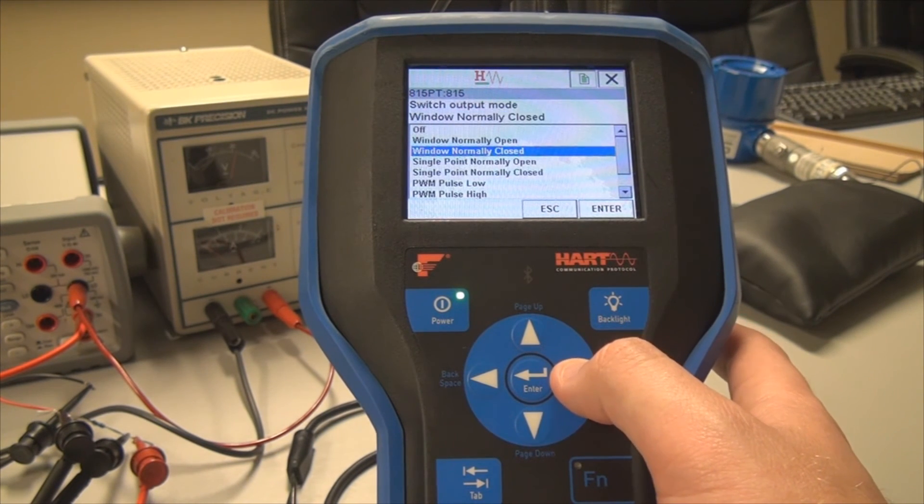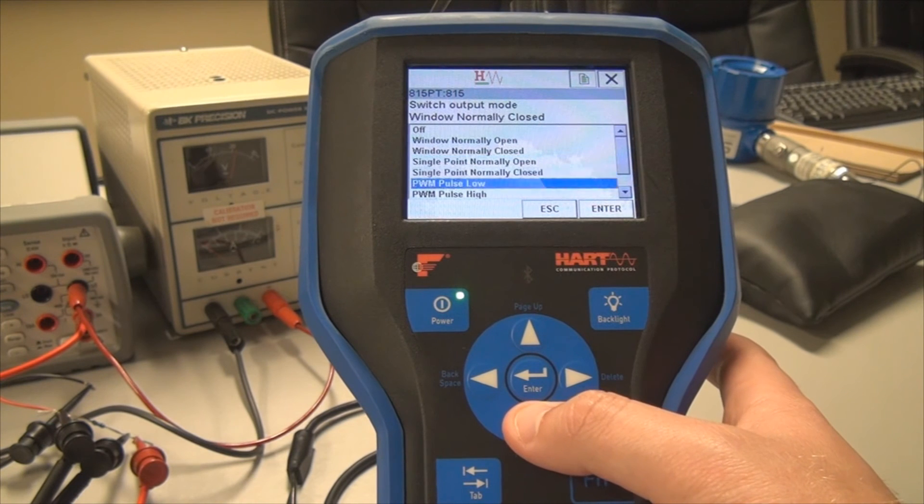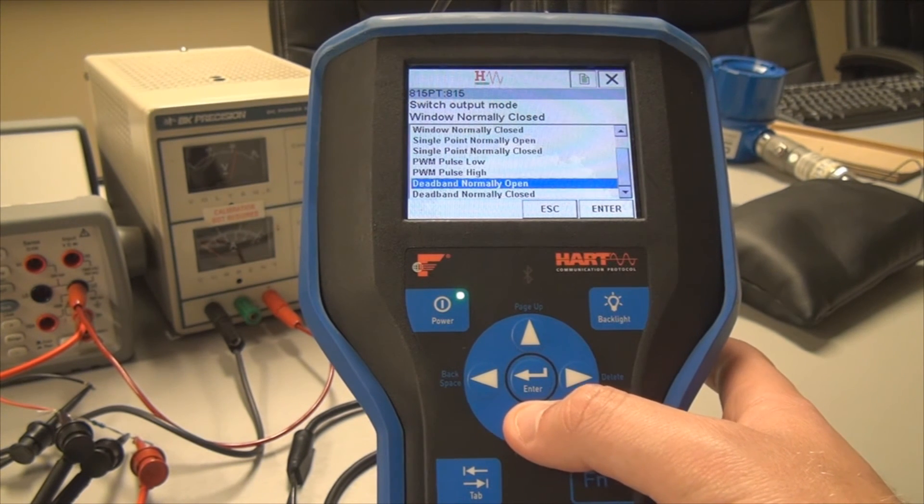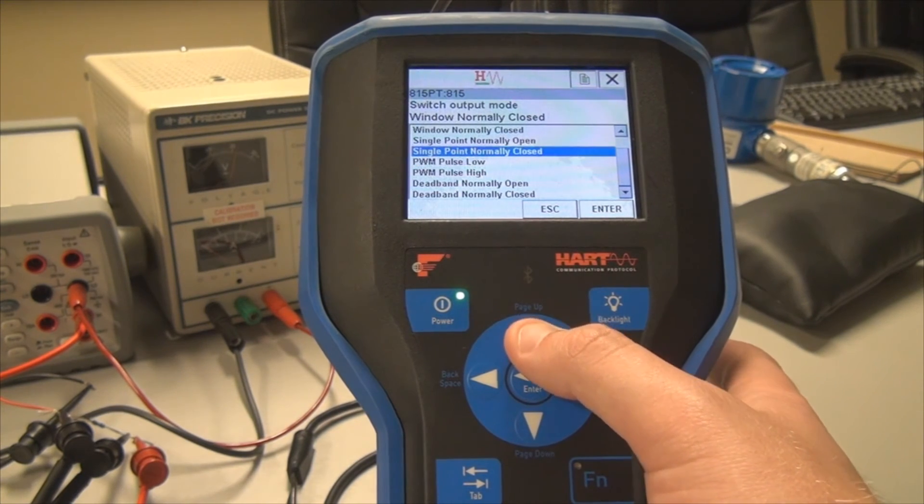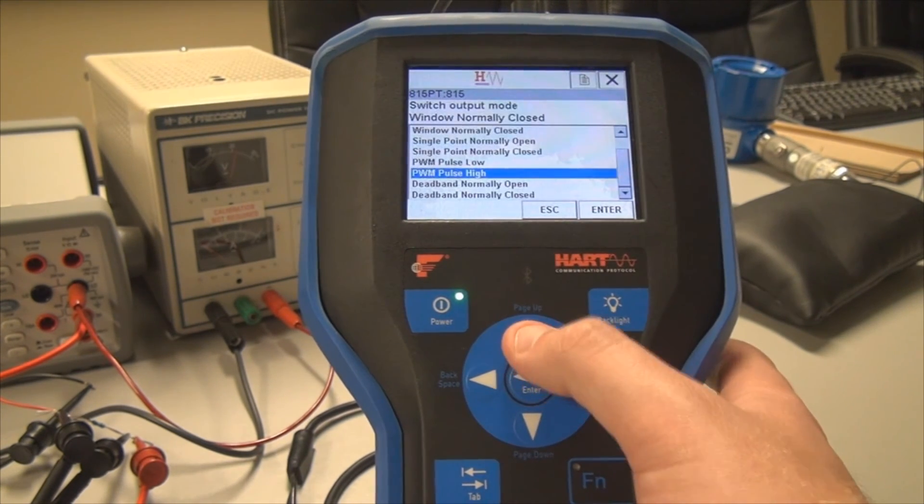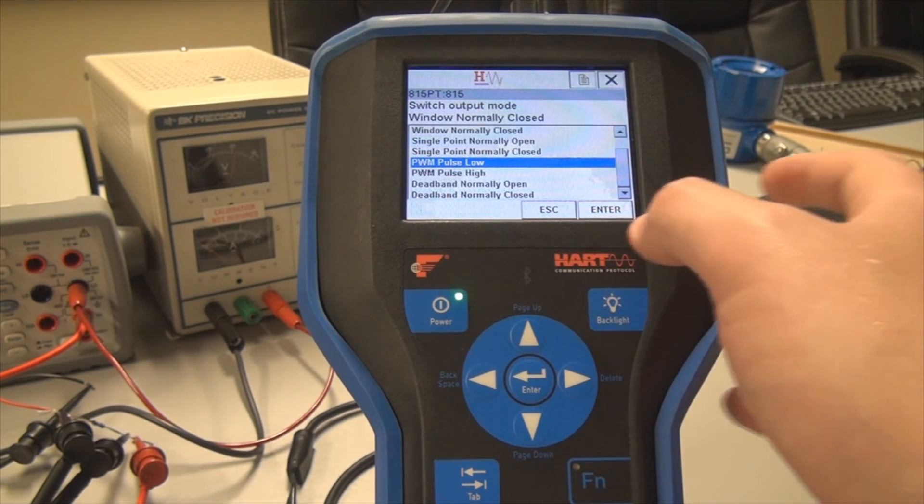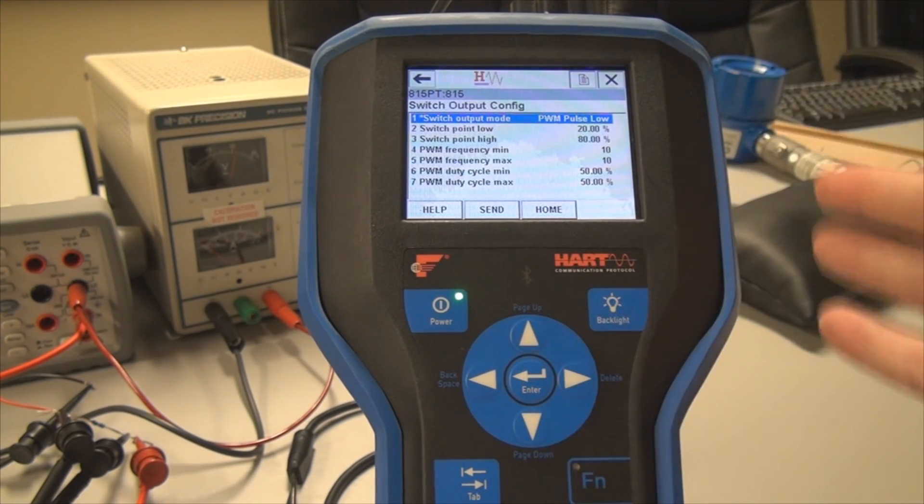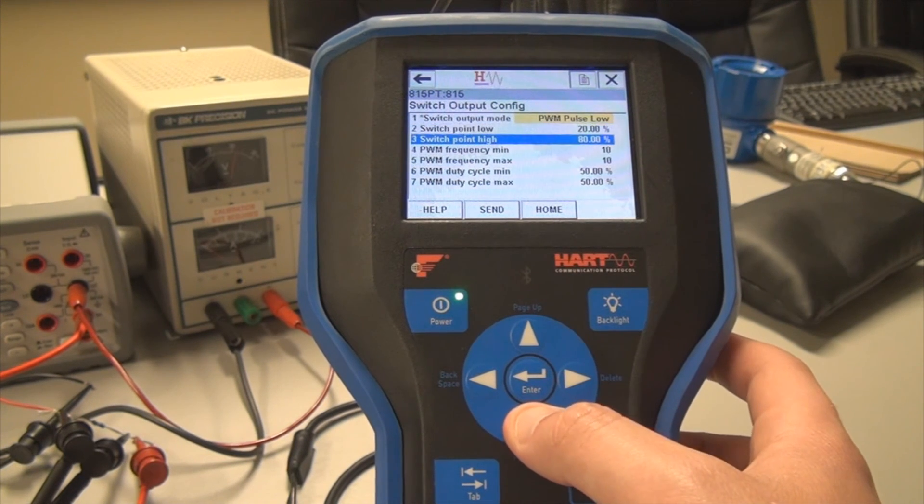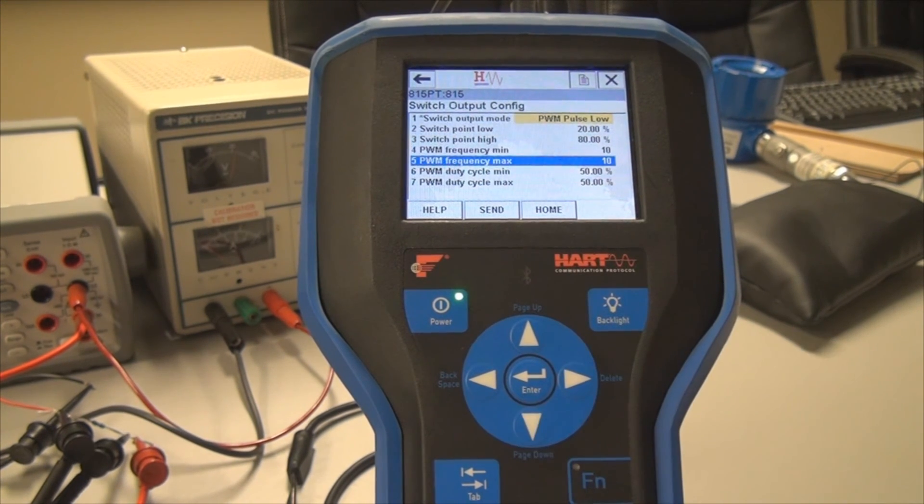So currently we're in window normally closed. And then you can see here all the nine different ways you can configure the switch output. And to select one, you just say you want to select pulse width modulation pulse low, just hit enter. And then there you go. And you can enter all your values and parameters here on that main screen.